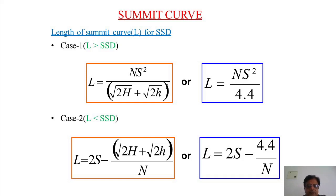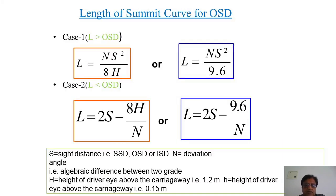The values are H = 1.5 m and h = 0.1 m, or H = 1.2 m and h = 0.15 m. For overtaking sight distance (OSD), when L is greater than OSD: L = NS² / 8H, or substituting H = 1.2 m, L = NS² / 9.6. When L is less than OSD: L = 2S − 8H/N, or L = 2S − 9.6/N. These are the formulas to find the length of the summit curve for overtaking sight distance.